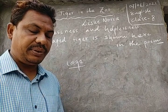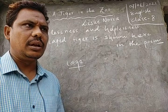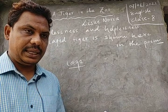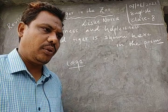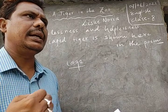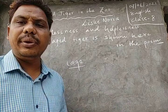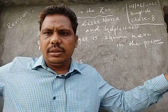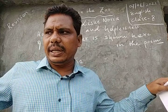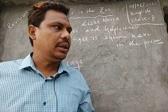He stalks in his vivid stripes. He stalks in his vivid stripes — the few steps of his cage. The tiger walks inside the cage with only a few steps. The tiger can neither jump, nor walk freely, nor go anywhere at any length. When a tiger jumps, it covers about six to seven feet in length.